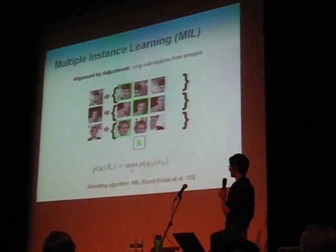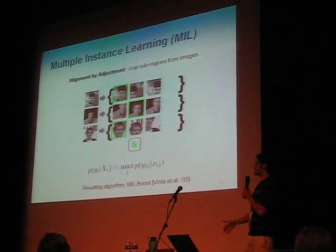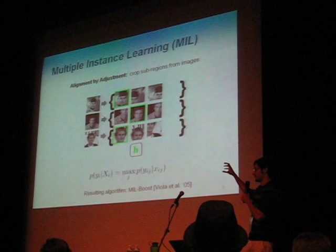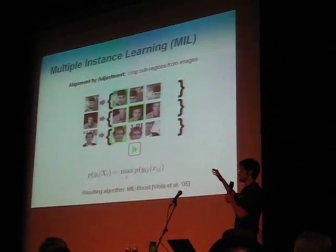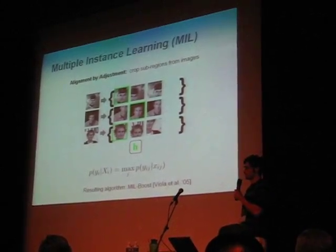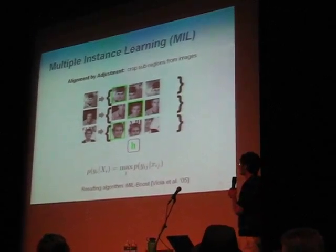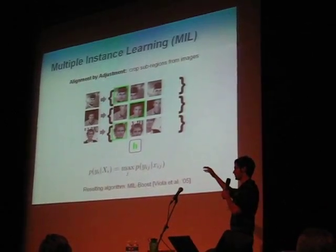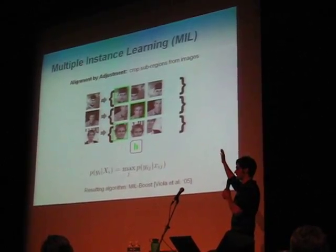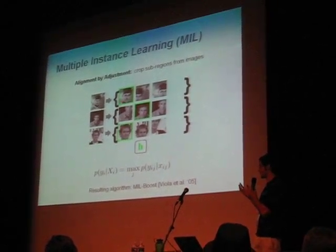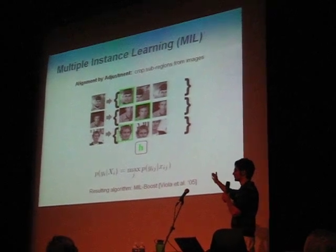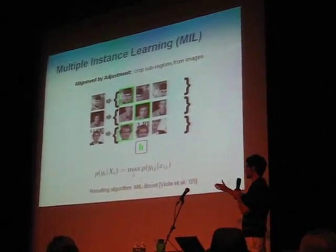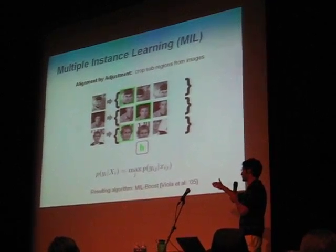The first type of alignment is: suppose we want to train a face detector and we're given a bunch of images that are not aligned. The goal is to find a sub-region in all the positive images that tightly crops out the face. This fits very nicely into a learning paradigm called multiple instance learning, proposed by Dietrich et al. in 1997. Every image is chopped up into a bunch of little sub-regions, and we know that for the positive images, every set of patches is going to contain at least one image patch that tightly crops out the face. We can express this probabilistically, and plugging this into the likelihood loss function, you get a boosting algorithm called MIL boost, which was actually proposed by Viola et al. in 2005.